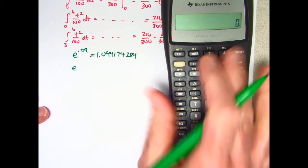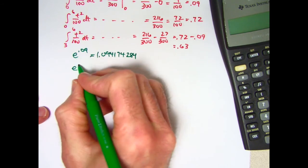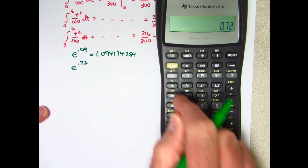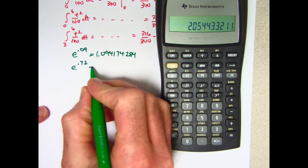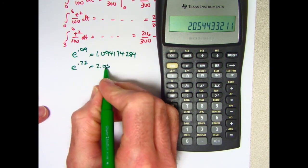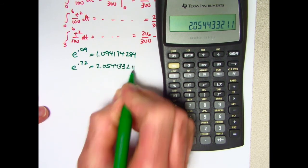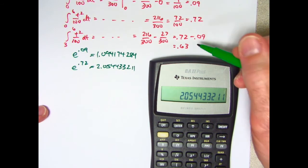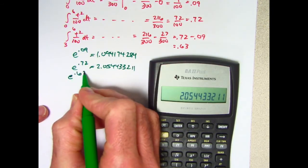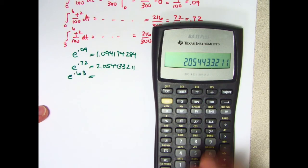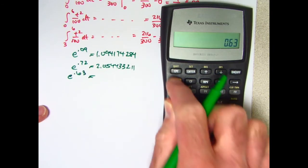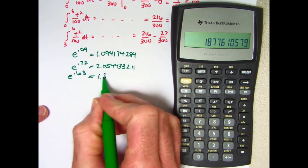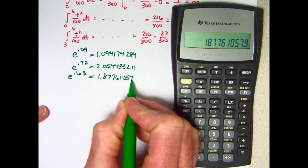I also need e to the 0.72. 0.72 second gives you 2.054433211. I also need e to the 0.63. That will be 1.877610579.